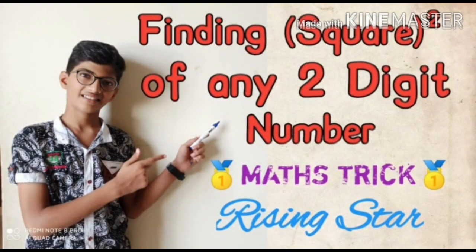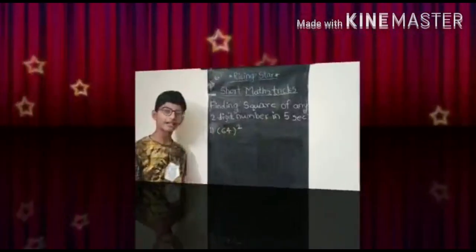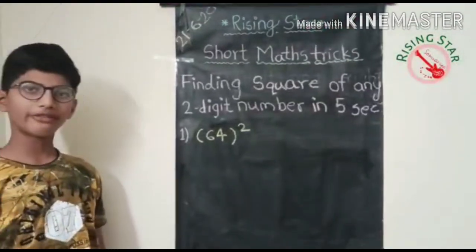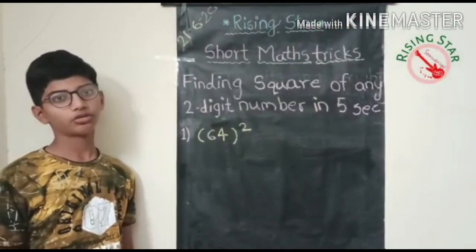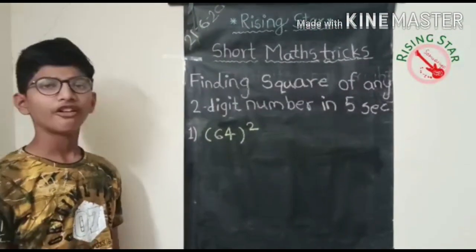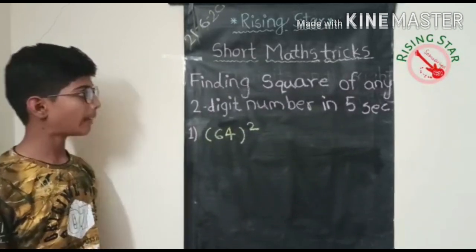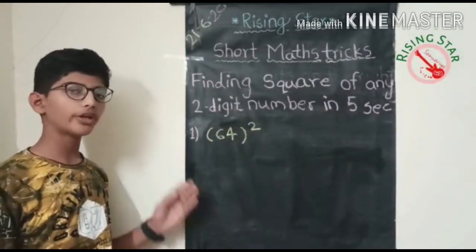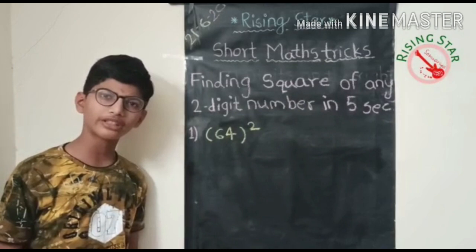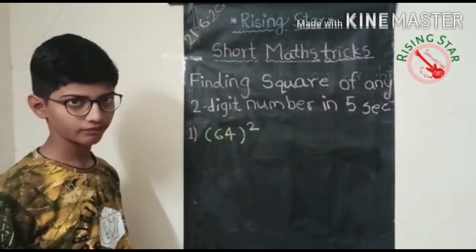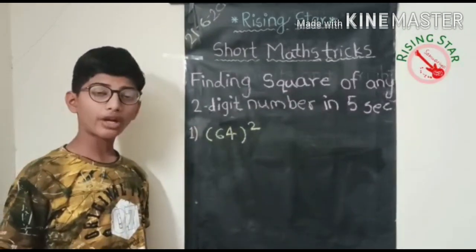Like, share, and subscribe to our channel Rising Star. Welcome to our channel Rising Star. Today we will see a short math trick. By using the simple method of finding square, we needed more than 30 seconds, but by learning this trick you would be able to solve the square of any two-digit number in just five seconds.